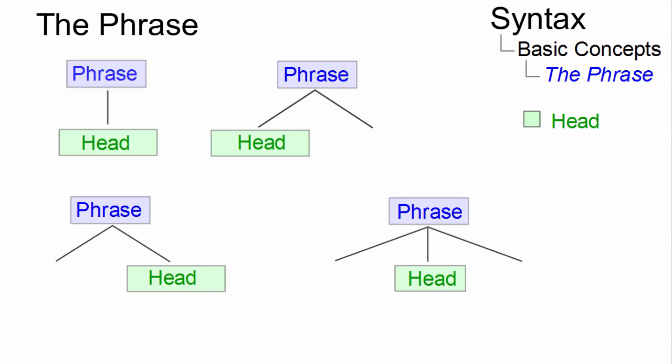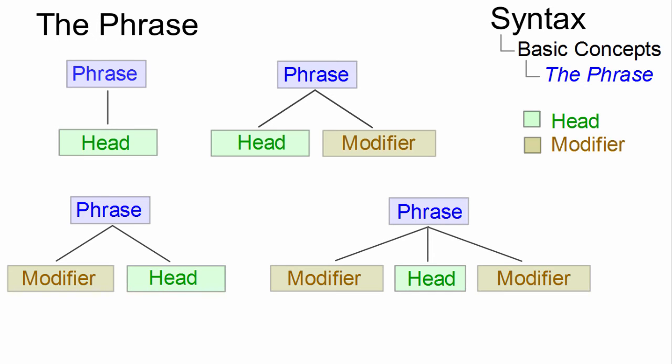All phrases have a head. It is the central and obligatory element which determines the type and the distributional properties of the phrase. The head can be preceded, followed or surrounded by modifiers.